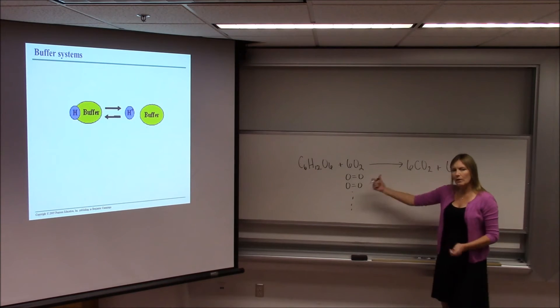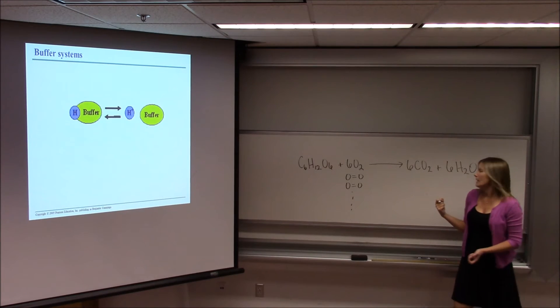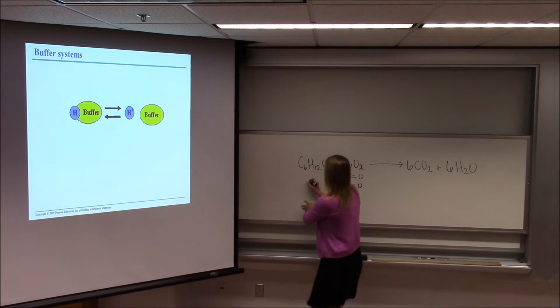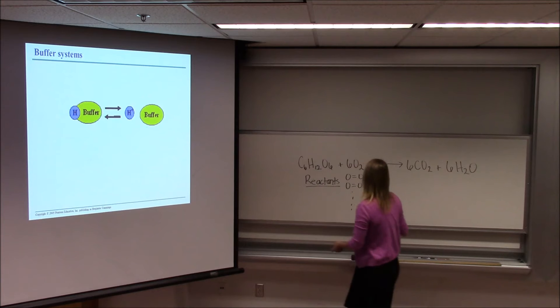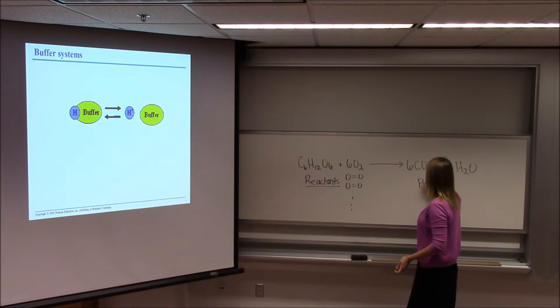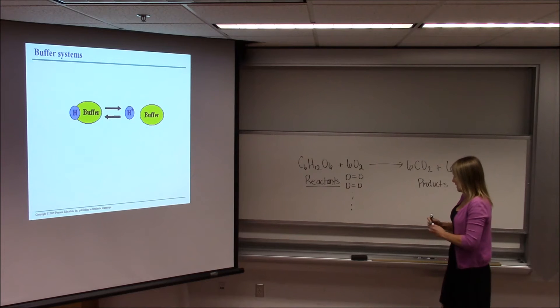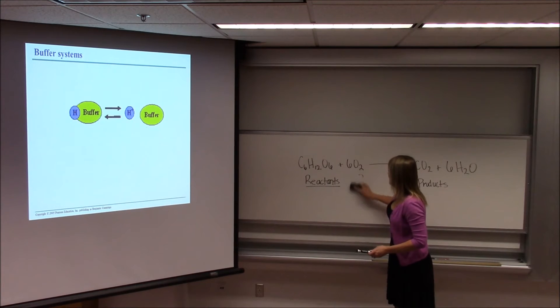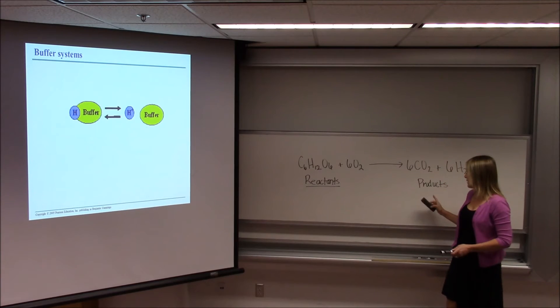This arrow is showing you the direction in which this reaction is proceeding. Everything to the left of the arrow is considered a reactant. So these are the reactants and everything on this side, these are the products. This arrow is telling you this reaction proceeds in this direction from reactants to products.